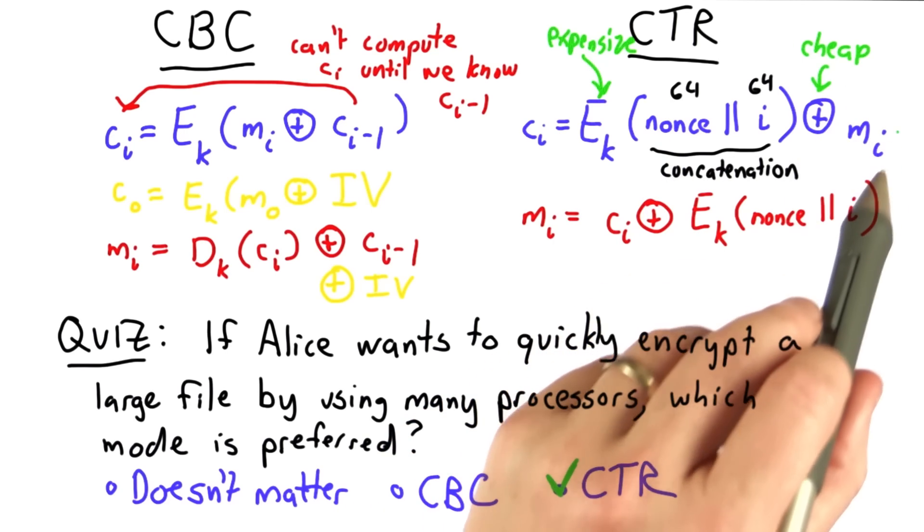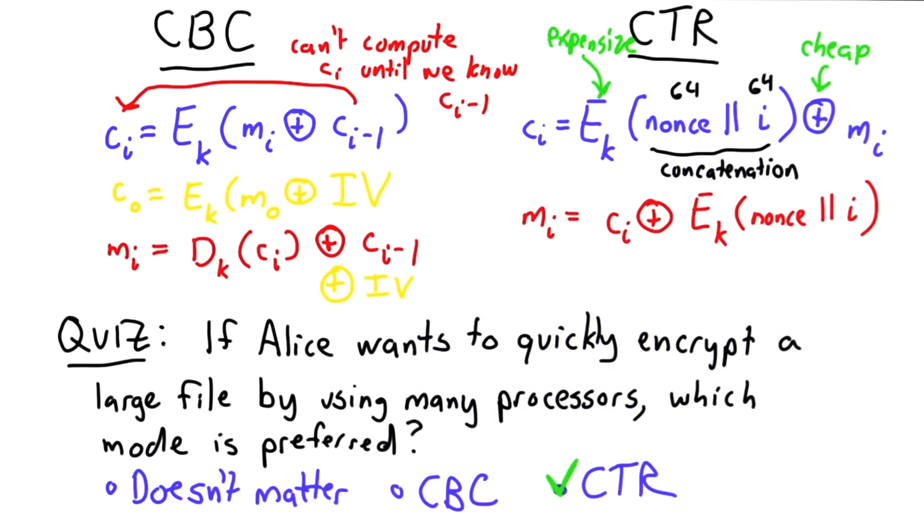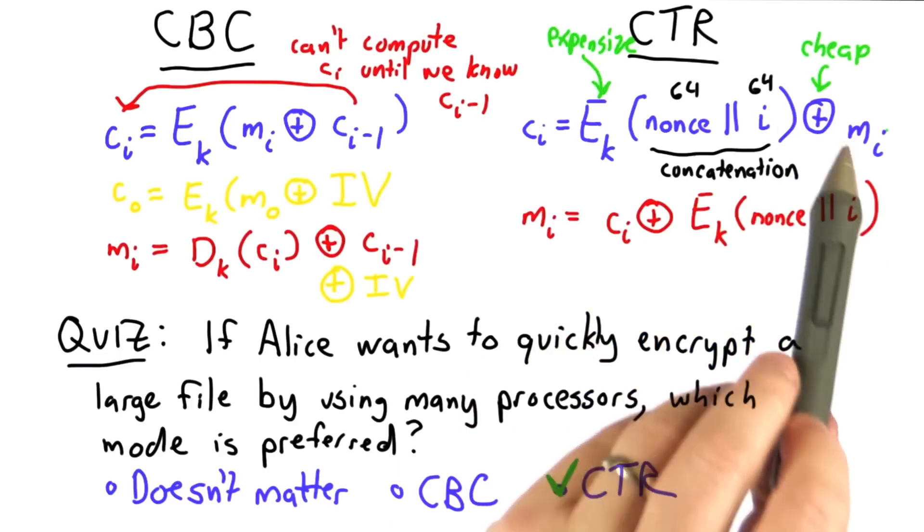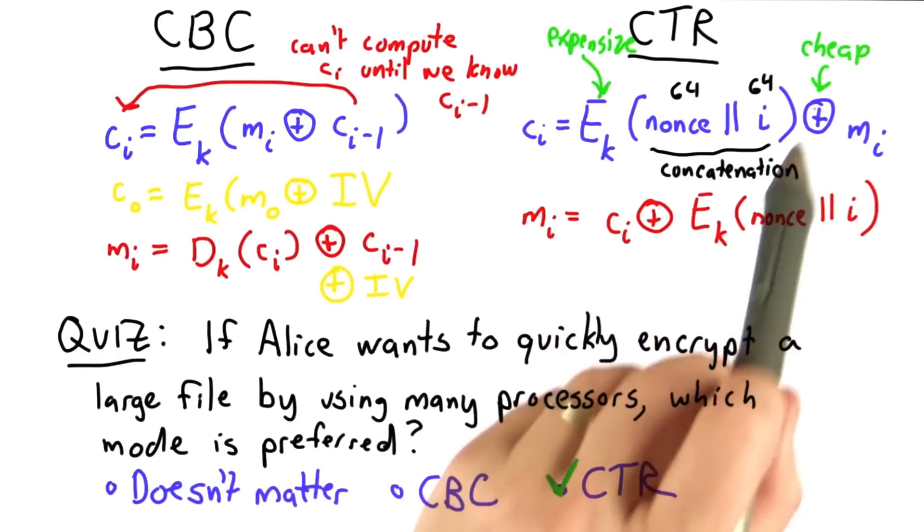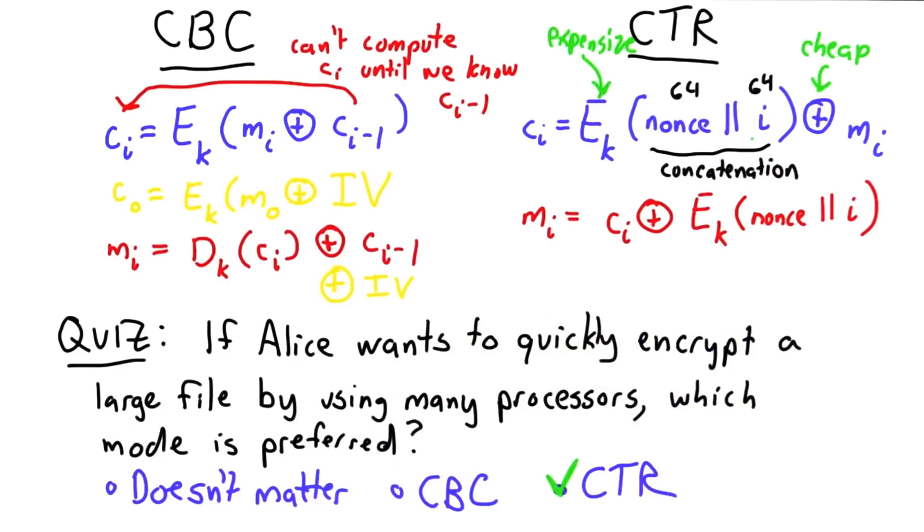And then once we know the contents of the file, we can do those XORs also in parallel, but those are very quick. All of these encrypted blocks could be computed in parallel using many processors. That's a big advantage of counter mode over CBC mode.